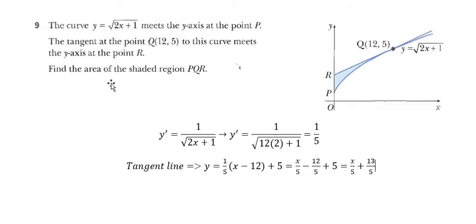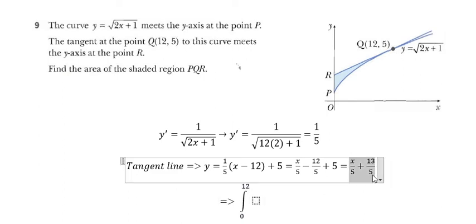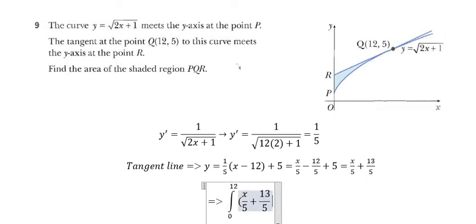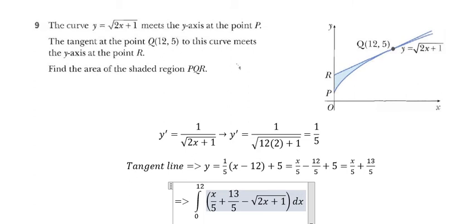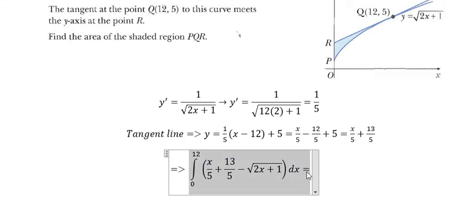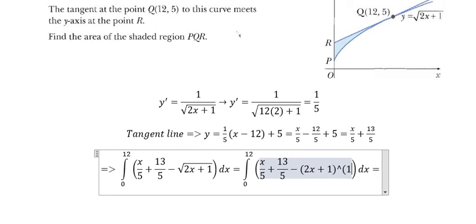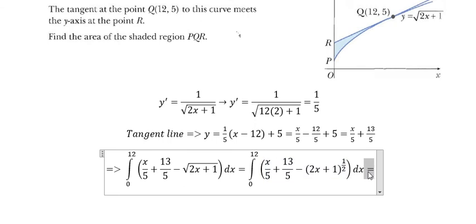The question asks us to find the area of the shaded region BQR. As you can see on the graph, the tangent line is above the curve. So we integrate from 0 to 12, taking the tangent line minus the curve. We can write the curve as (2x plus 1) to the power of 1 over 2, and now we apply the integral formula.